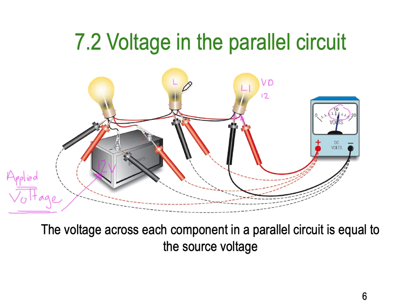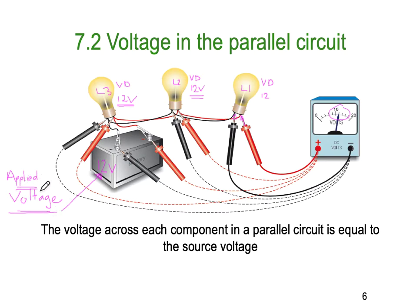Lamp 2 has a voltage drop of 12 volts, and because they're all connected, lamp 3 also has a voltage drop of 12 volts. A subtle difference in terminology: when talking about the voltage across the loads, we call them voltage drops, and when talking about the voltage supplied by the battery, we call it the applied voltage. In a parallel circuit they work out to be the same thing — the voltage across each component equals the source or applied voltage.